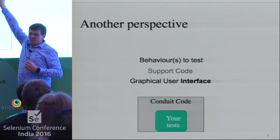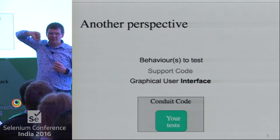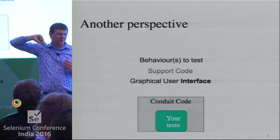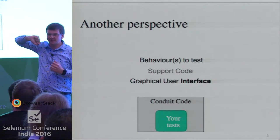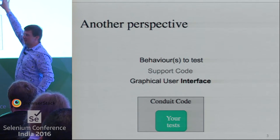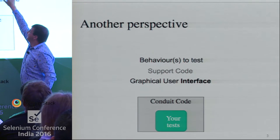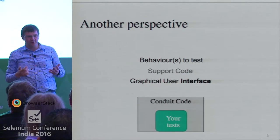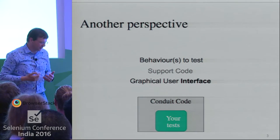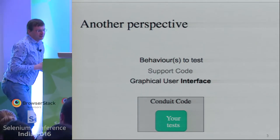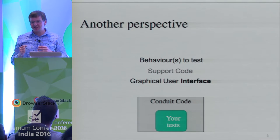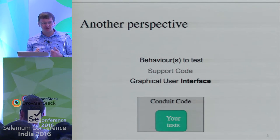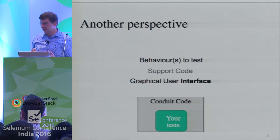That goes through a bunch of support code. How many of you have written software — not test automation software, but applications software or system software? Essentially, there's normally lots and lots of code that runs that finally gets us to the behaviors we want to test, whether it's a login, whether it's putting something in a shopping basket, whatever we're trying to achieve. And if there are problems with the interface or with the behavior of the code, the code is likely to be less reliable.